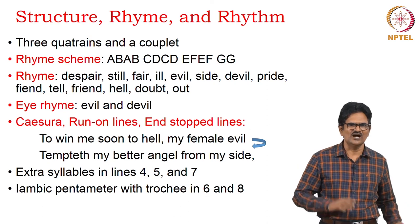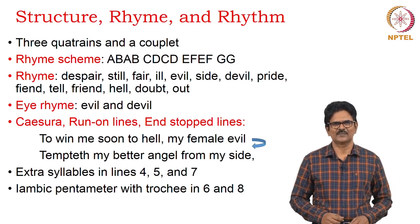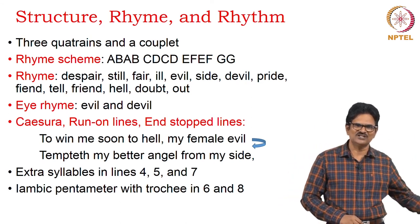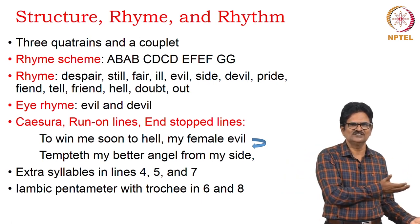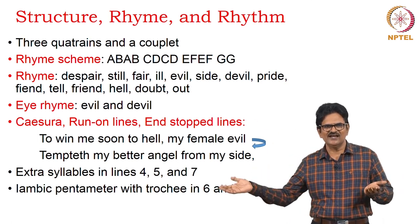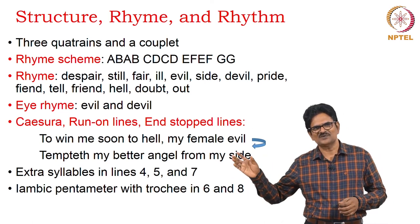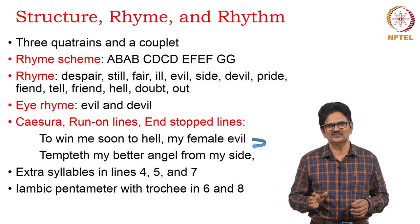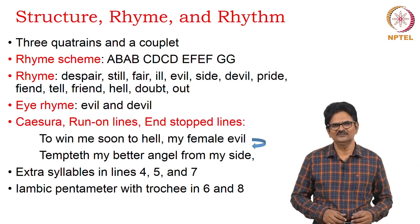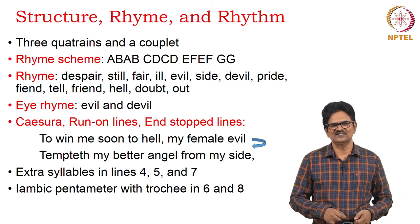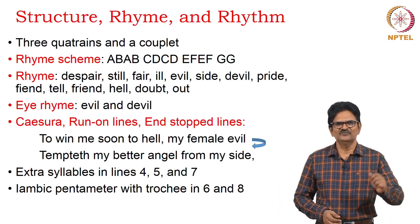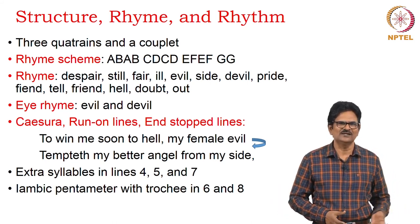We have caesura, run-on lines, and end-stopped lines. 'To win me soon to hell' — we have a pause — 'my female evil tempteth my better angel from my side' goes on continuously. There are extra syllables in lines four, five, and seven. Though we have iambic pentameter in this sonnet, there is some variation of trochee in lines six and eight.